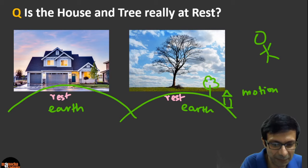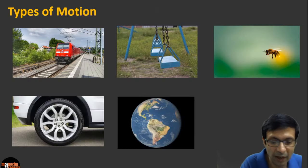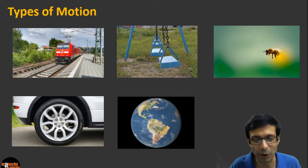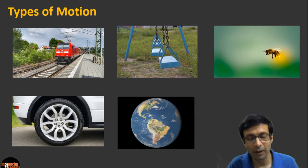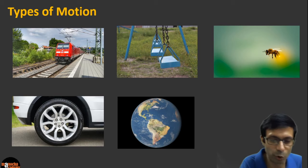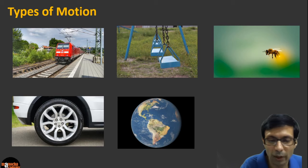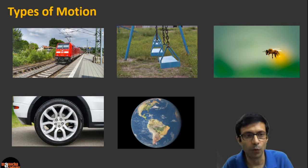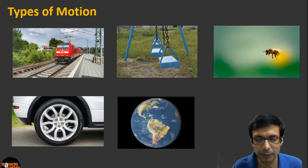So please understand that whether an object is at rest or in motion is completely relative to the observer. Now let's quickly go over the different types of motion. When a train is moving on a straight line track, what type of motion is that?